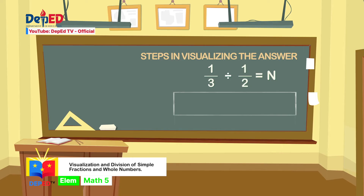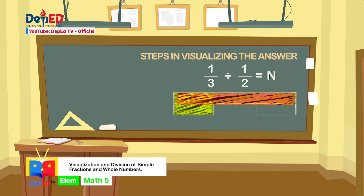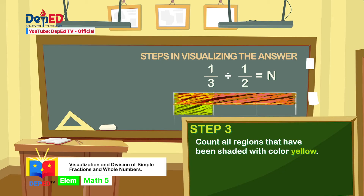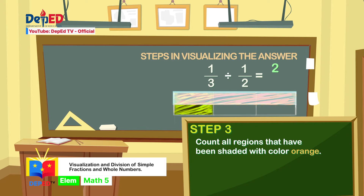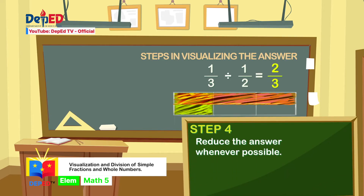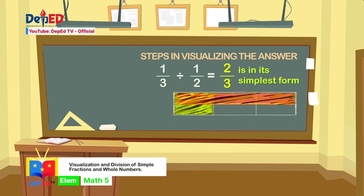Since we need to produce 3 parts, we will create 2 vertical columns. We draw 2 vertical lines to divide the rectangle into 3 parts. We shade one part to represent one-third. Then we divide the rectangle into two parts by creating a horizontal line and shade the other part to represent one-half. Step 3 - Count all regions shaded with yellow: there are two, which will be our numerator. Count all regions shaded with orange: there are three, which become our denominator. Therefore, our answer is two-thirds. Step 4 - Reduce the answer whenever possible. Two-thirds is already in its simplest form.